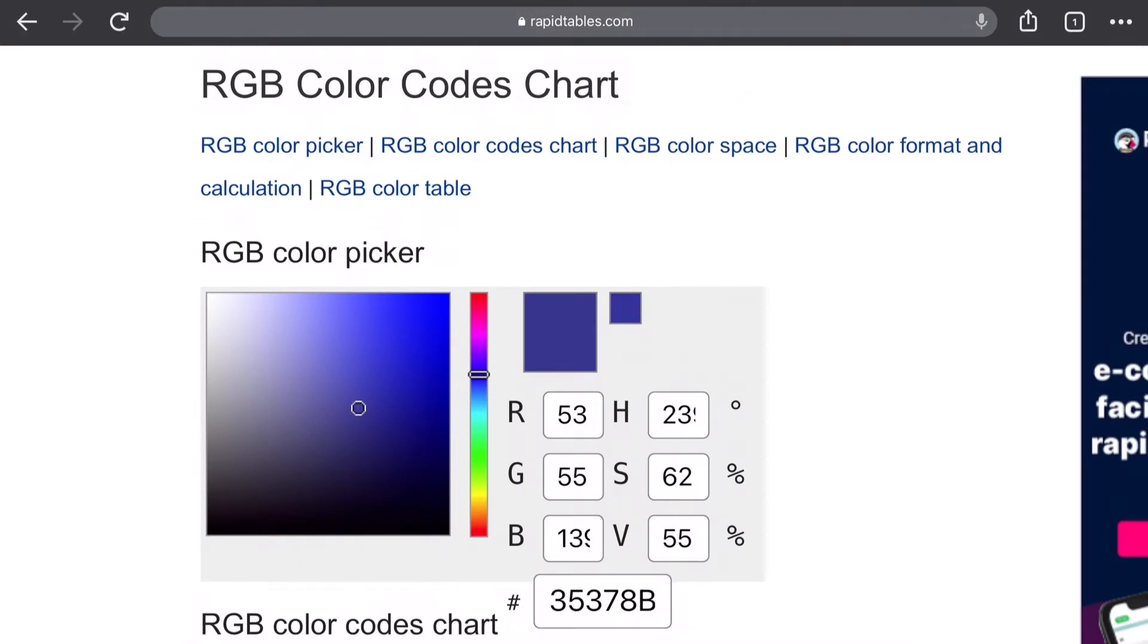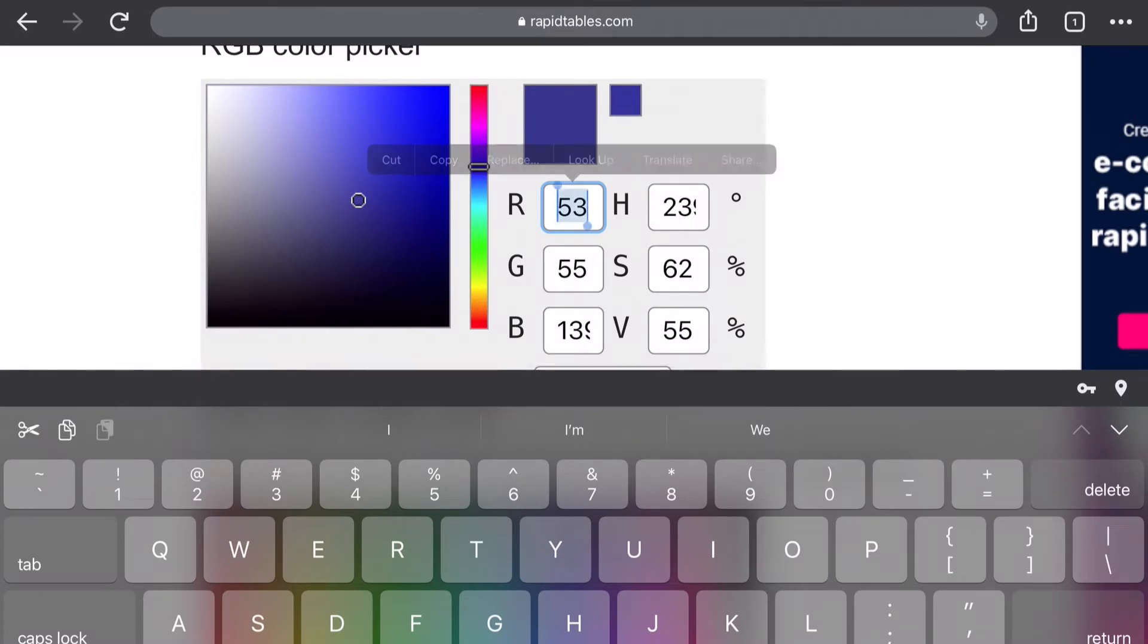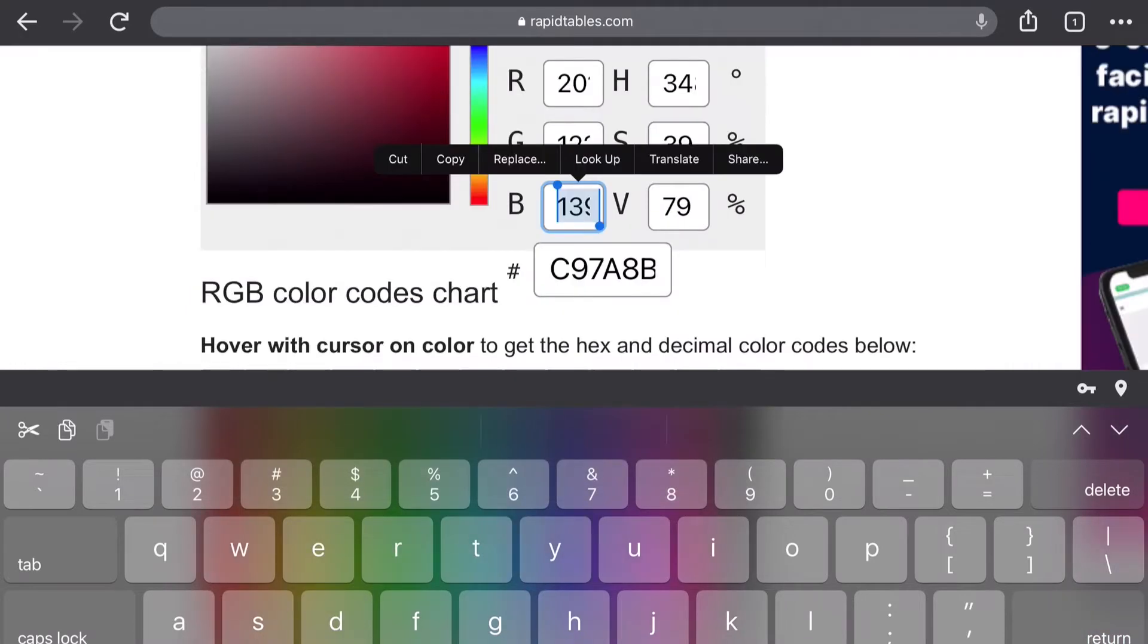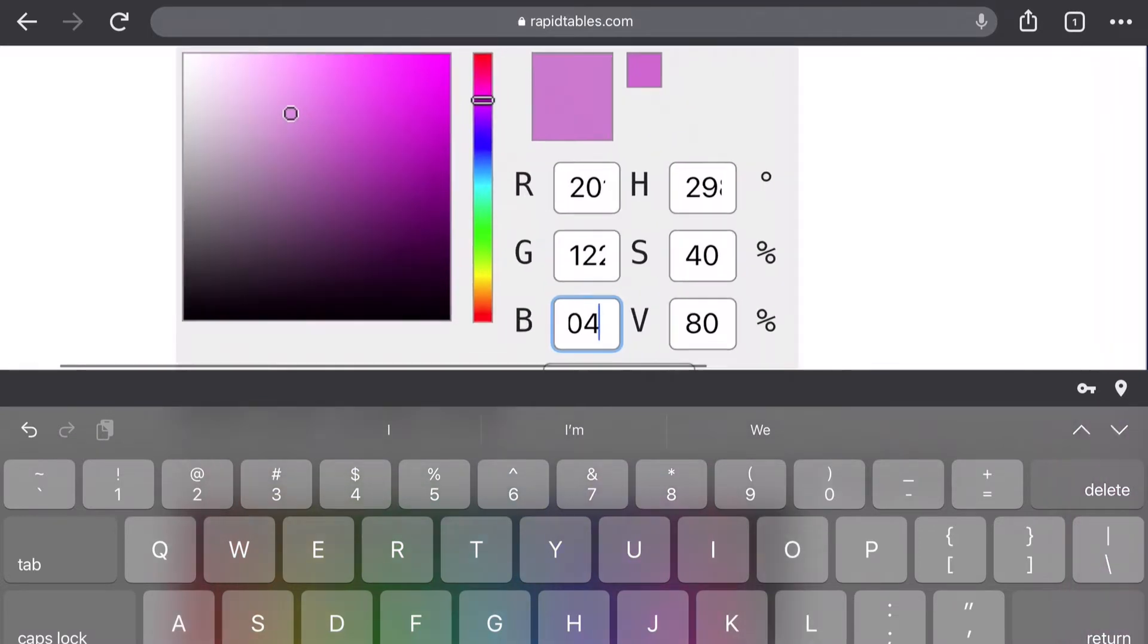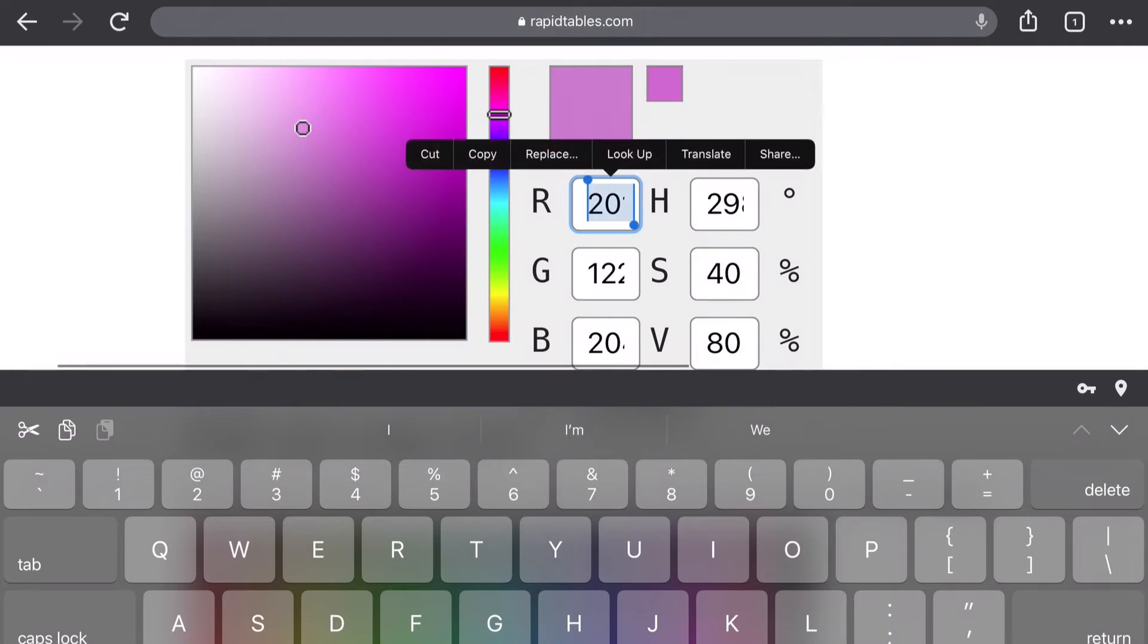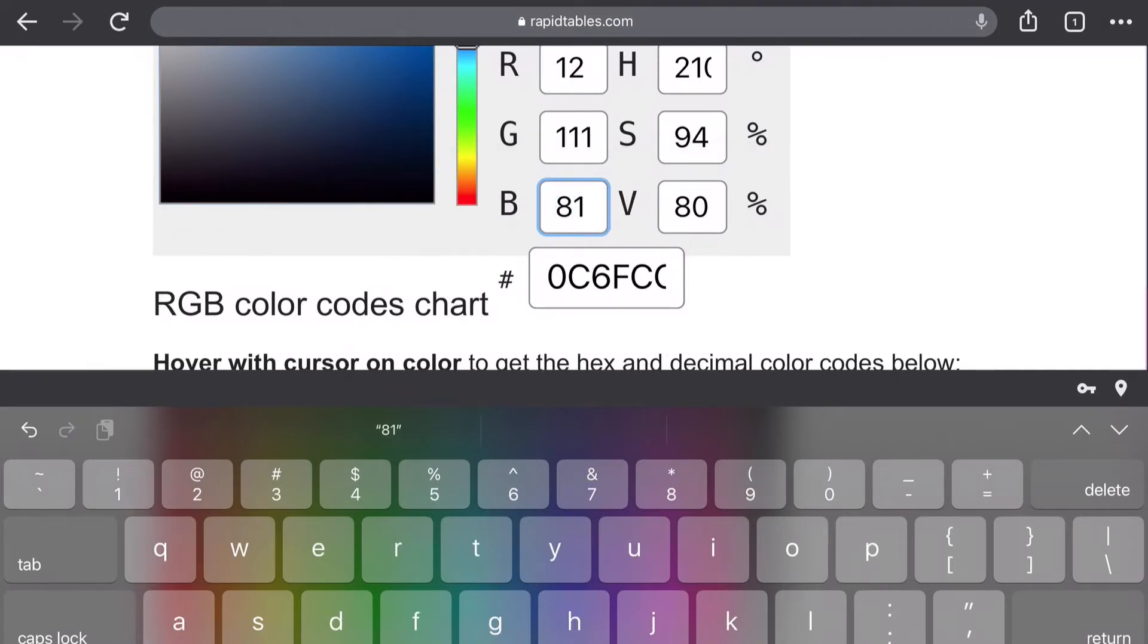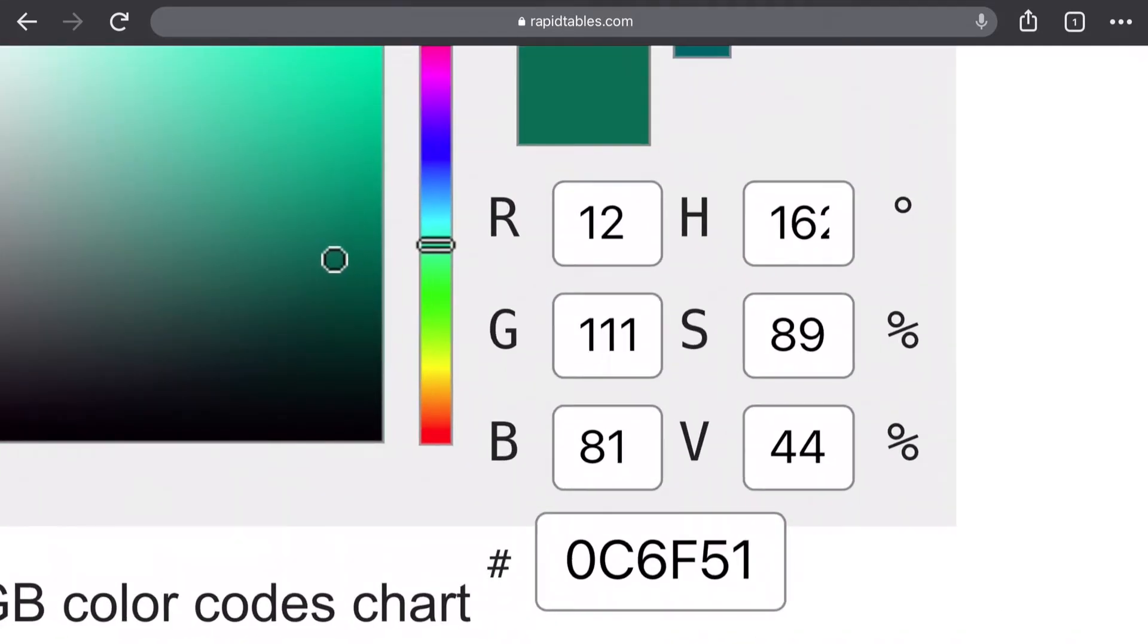The next one would be, just to go through it, 201, a lot of red, nice pink glow there, 122, and 204, and here we've got a lovely light purpley-pink. And then finally, we had 12, 111, and 81, and here we've got a darkened green color there.